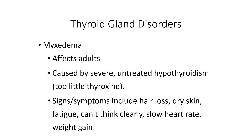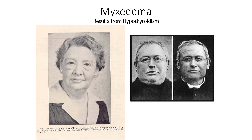The first problem we're going to talk about is called myxedema. This condition affects adults and comes from severe untreated hypothyroidism, meaning too little thyroxine. The symptoms include hair loss, dry skin, mental fog, slow heart rate, and weight gain. I actually have hypothyroidism, though not at this severe myxedema level, but it does have similar symptoms such as weight gain, fatigue, and sometimes feeling like you're in a mental fog. In the images, you'll notice the picture on the left shows a lady with swelling around her face — that's typical of myxedema. The man on the right has received treatment and has lost some of that fluid buildup. Myxedema has the word edema built in, and swelling is a typical feature of this condition.